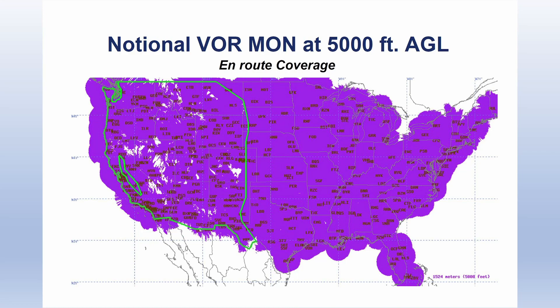VORs were the primary method of electronic navigation for pilots between the 1960s and the early 2000s, before the use of GPS became commonplace. Though the FAA has reduced the number of VORs in the United States over the last decade, it plans to keep a minimum network of 589 stations to serve as a backup for the GPS system well into the future. This network will allow VOR navigation in most areas of the country above 5,000 feet AGL. So VORs will be around for a while yet, and it's a good idea to learn how they work and how to use them.